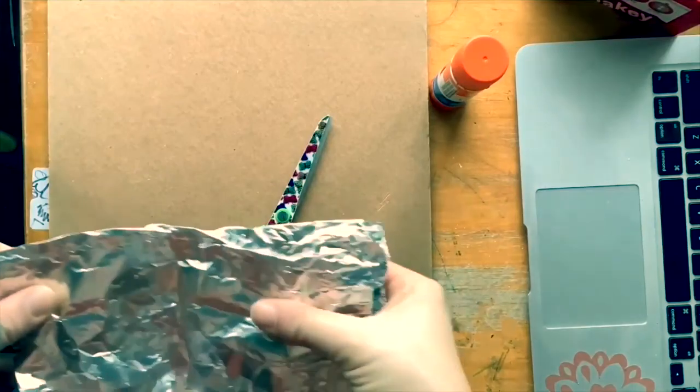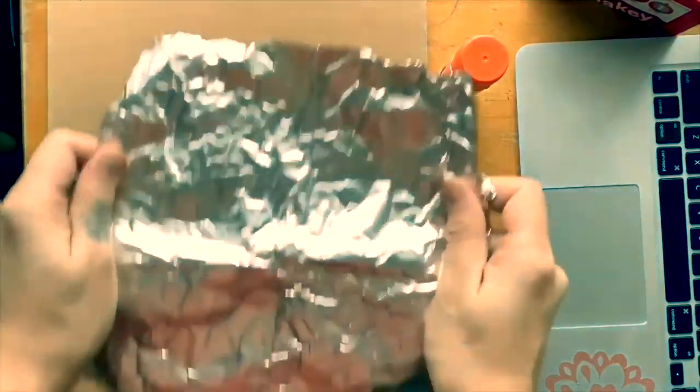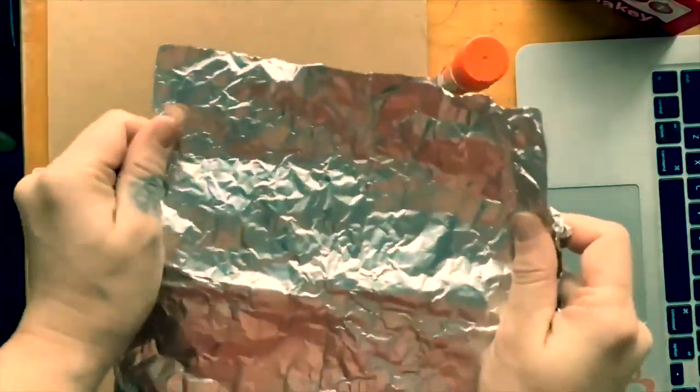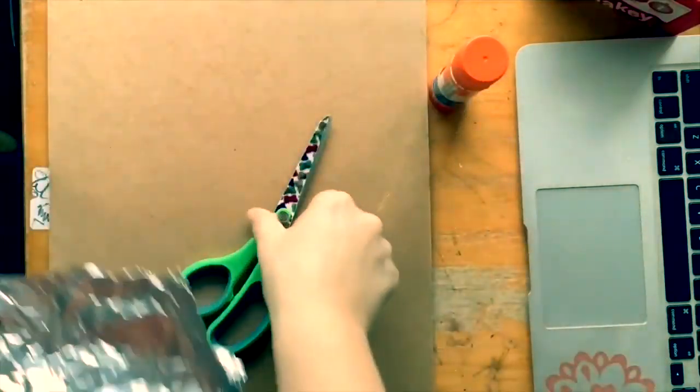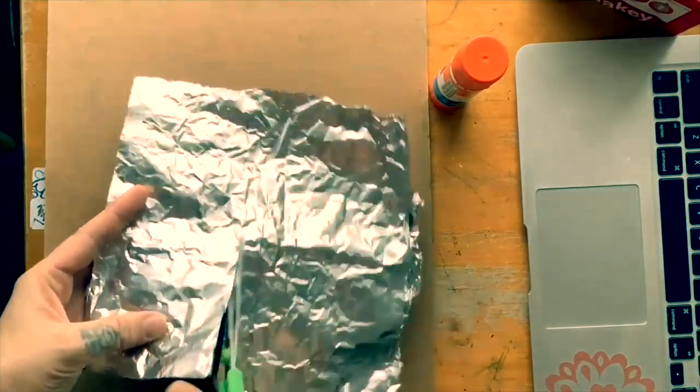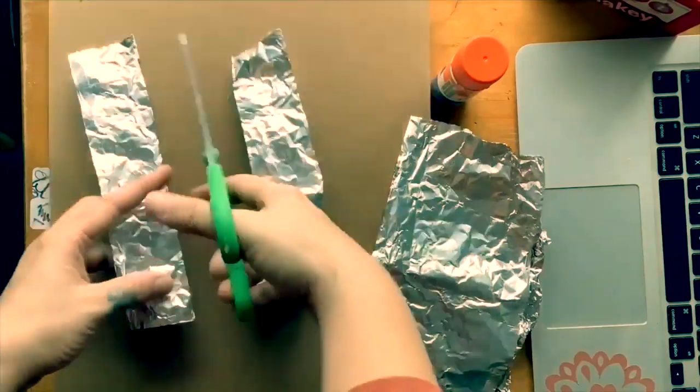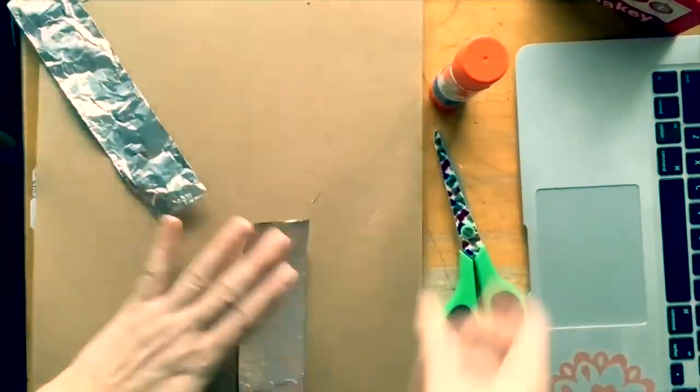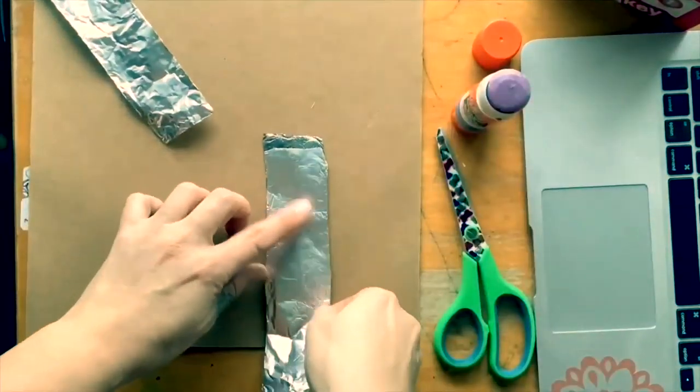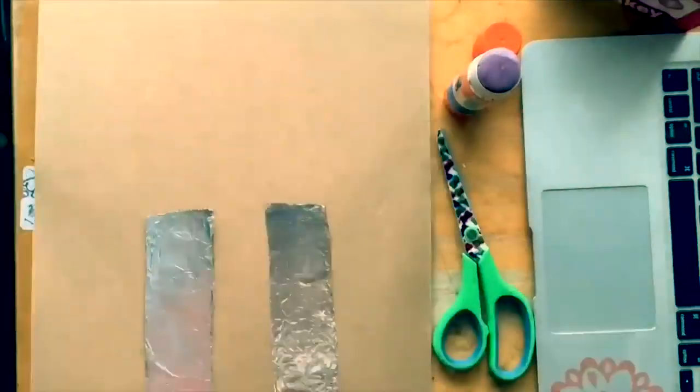This world is either a conductor or an insulator. So we're going to create an experiment here where we're going to test items and see which are conductive. So we've grabbed some foil, some scissors, and some glue, and we're going to create our testing station. So we're just going to glue down two strips of aluminum foil. They're going to stretch over the edge of our cardboard, and then we're going to show you how to plug it in.